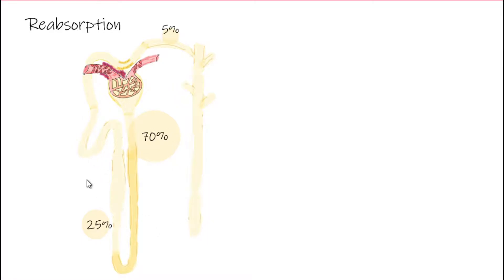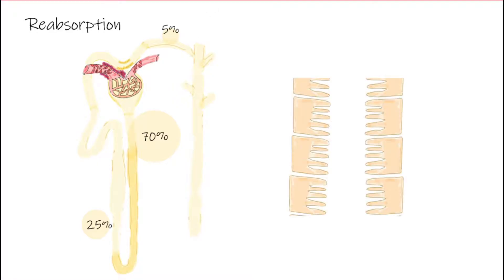So 95% of what we reabsorb is not regulated — there are some minor exceptions, which we'll point out — and only about 5% is regulated. Now if we look at the proximal tubular cells, which is what I've drawn here, we're going to see a couple of different major ways that we may reabsorb substances.